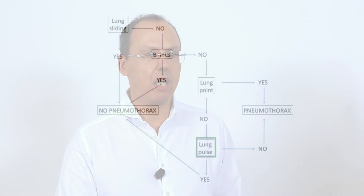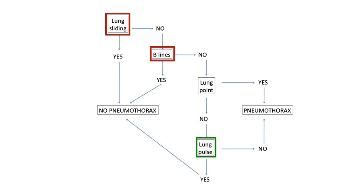When you see any movement of the lung relative to the chest wall — so lung sliding or pulse, or any sign of parenchymal involvement such as B-lines or consolidation — you can exclude pneumothorax. Yes, but don't forget it is true only in the place where you put the probe. Sometimes it's not enough to look for pneumothorax only in one chest area.